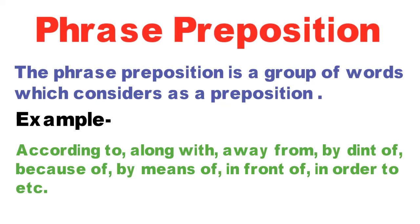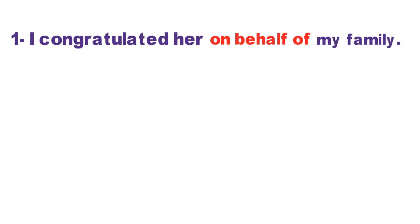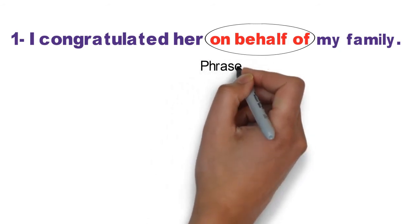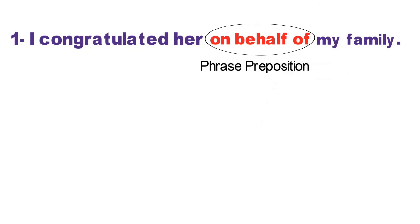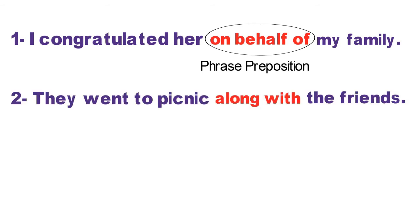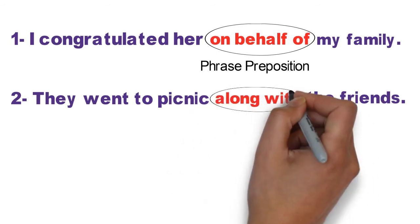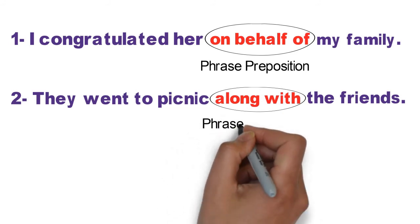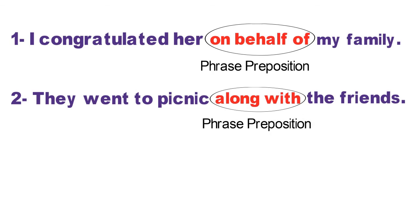Aiye phrase preposition ko kuch sentences mein use karke dekhte hain. Pehla sentence: I congratulated her on behalf of my family. Mainne use apne parivaar ki or se badhai di. Is sentence mein group of words 'on behalf of' likhe gaye hain, jismein 'on' aur 'of' simple prepositions hain, jabki 'behalf' yahan par ek noun hai. Inhe hum ek single preposition ki tarah count karenge aur yahan phrase preposition kehlayegi. Doosra sentence: They went to picnic along with the friends. Is sentence mein bhi group of words 'along with' use hua hai, jismein 'along' ek adverb hai jabki 'with' ek preposition hai, aur yeh donon ek single preposition ki tarah consider honge — phrase preposition.